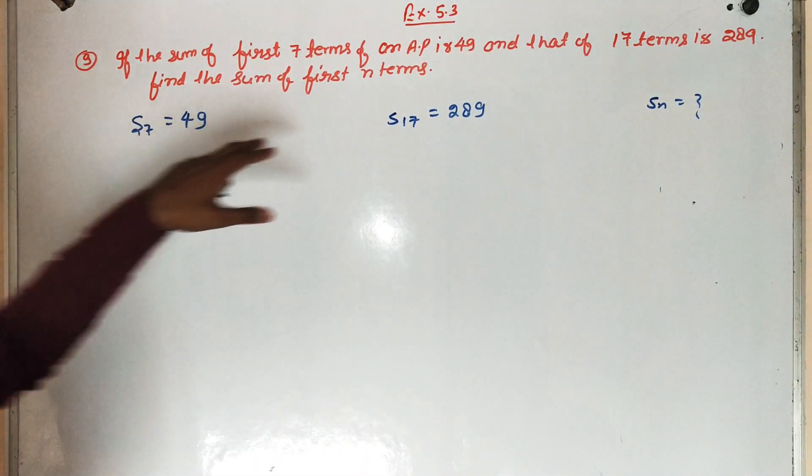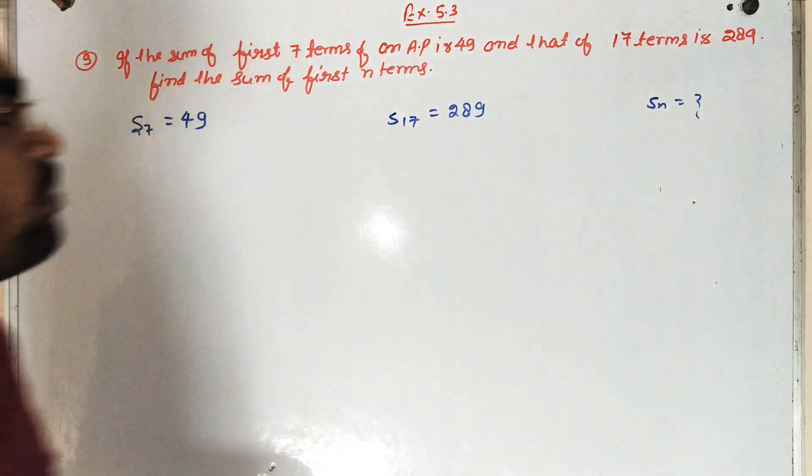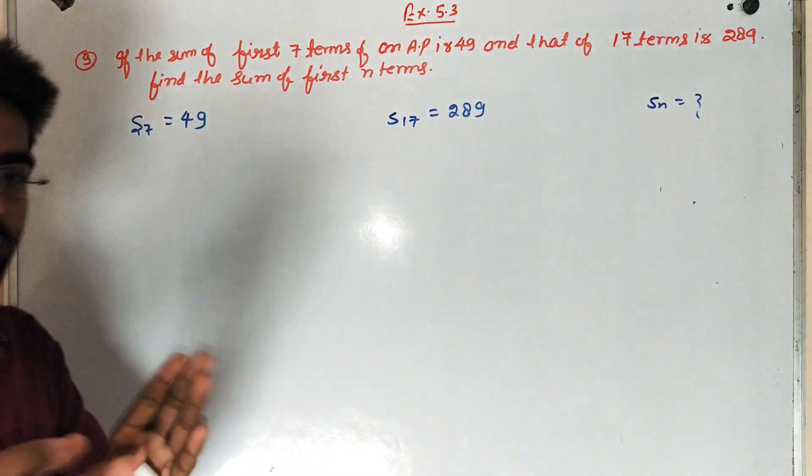Students, sum of 7 terms given hai, sum of 17 terms given hai and sum of Nth term find karna hai. So first we have to find first term and common difference.